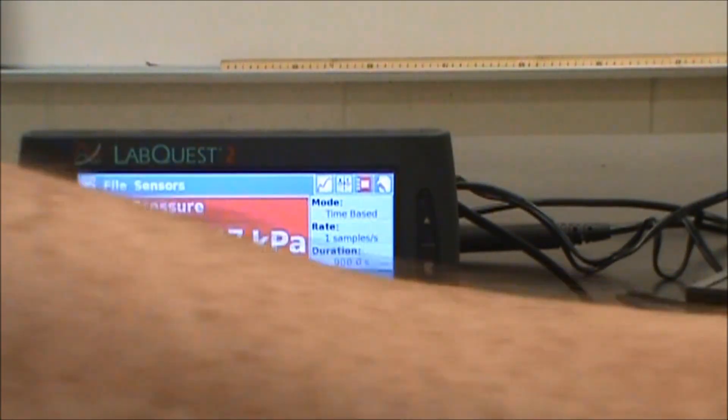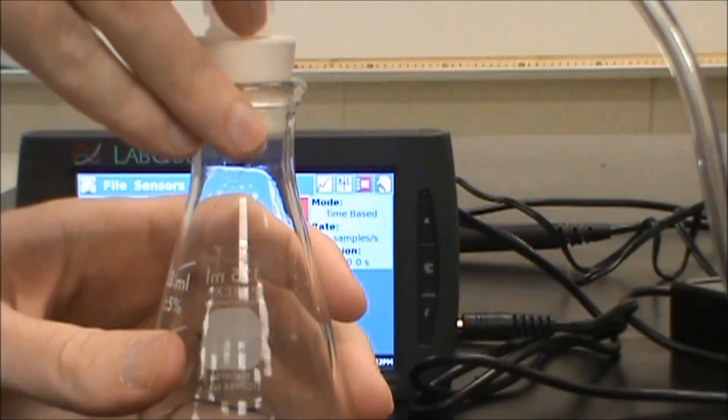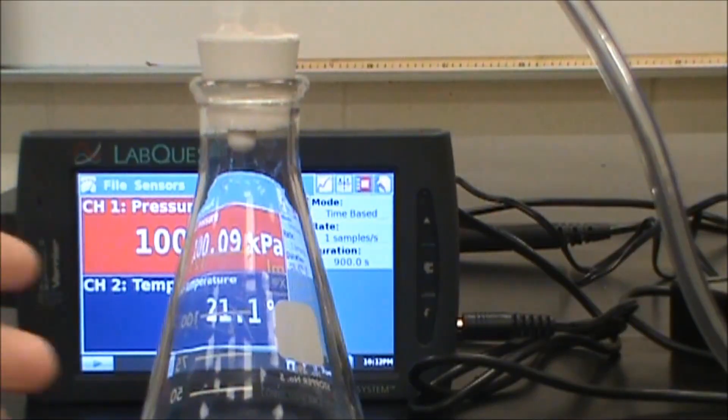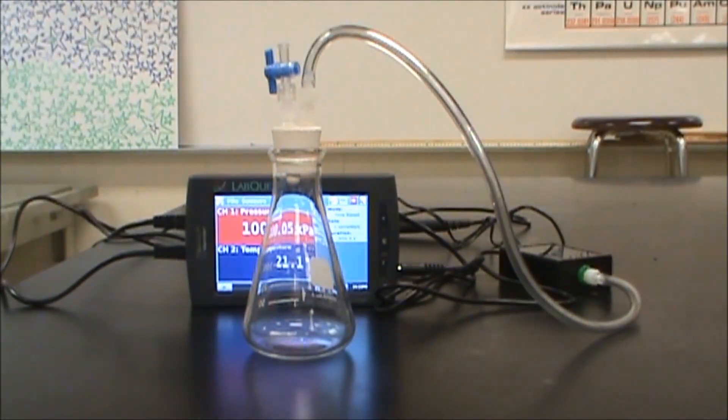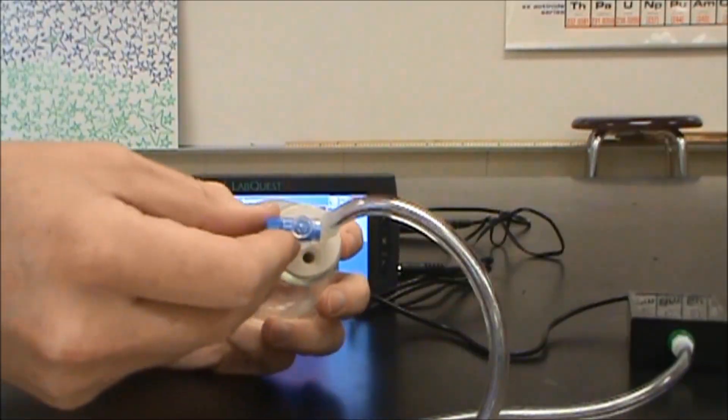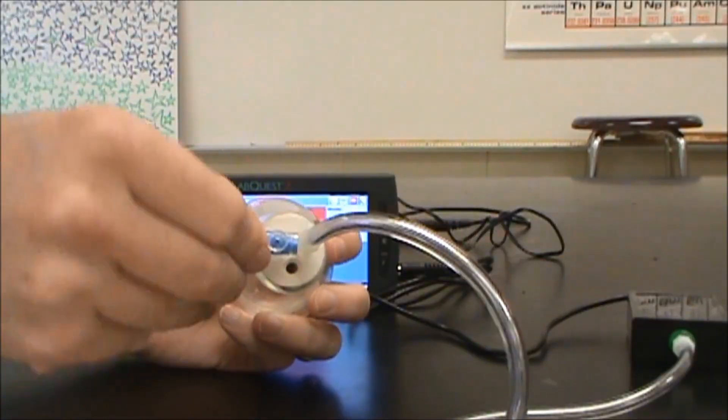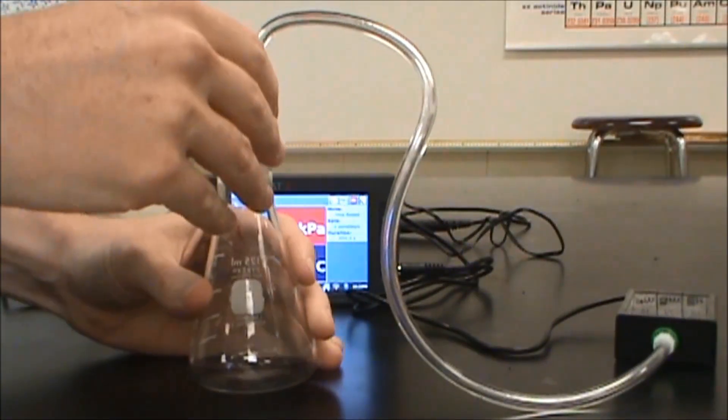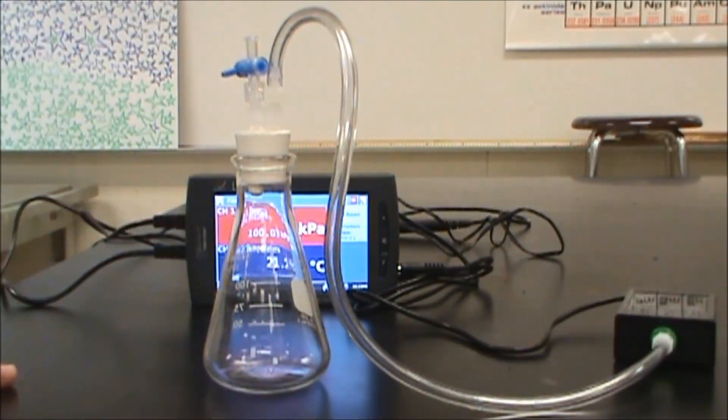I have the pressure hooked up to this. This currently is just an Erlenmeyer flask that is hooked up to my sensor here. On here this will close or open this to the atmosphere, so I'm going to close this so that all of the gas inside of here and in the tubing is giving me the pressure and nothing else.